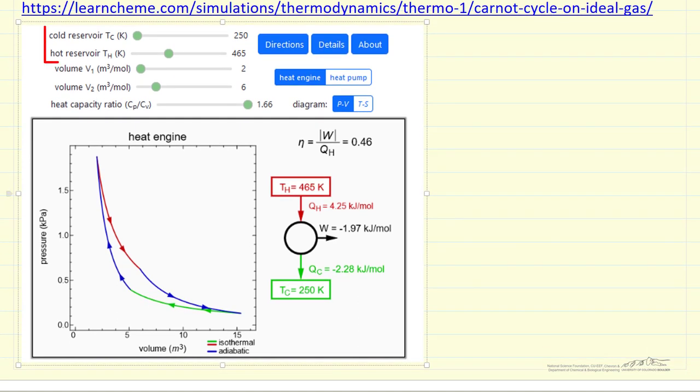We can change the temperatures of the hot and cold reservoirs, and we can change the two volume limits, as well as the heat capacity of the ideal gas. This is shown as a heat engine, and can also be run as a heat pump.